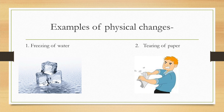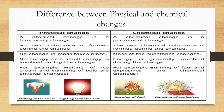Examples of physical changes are freezing of water and tearing of paper. Now let us see the difference between physical and chemical changes. A physical change is a temporary change, whereas a chemical change is a permanent change. No new substance is formed during a physical change, but a new substance is formed during a chemical change.